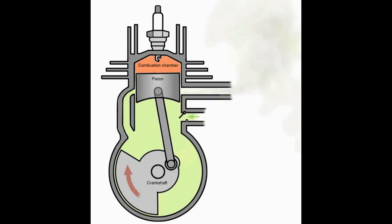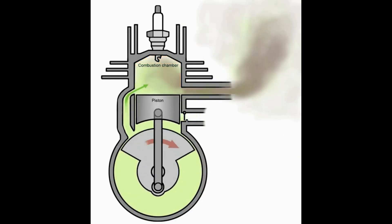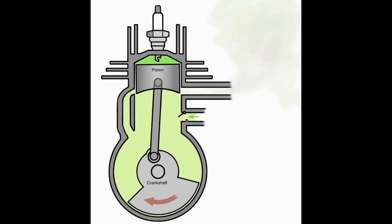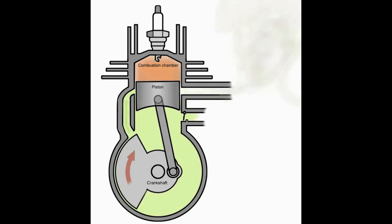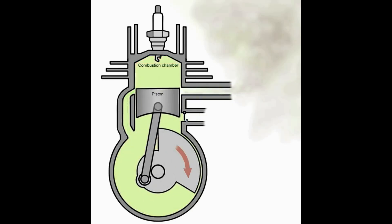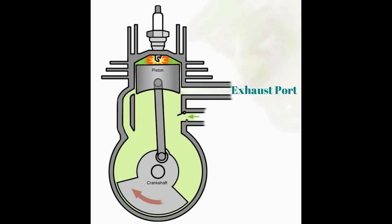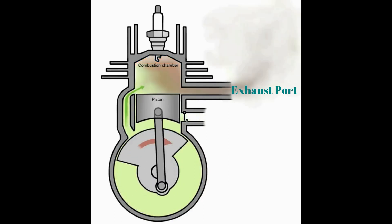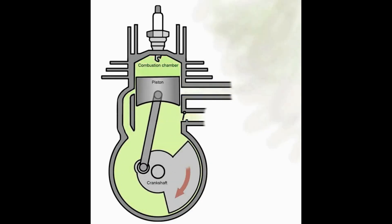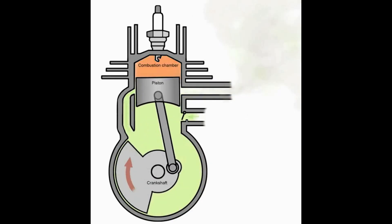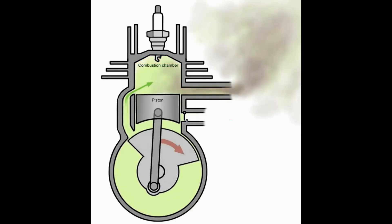The two-stroke engine has one piston. The crankcase is used for the gas exchange. There is also a spark plug, as well as an intake and exhaust port. A crucial difference is the presence of a transfer port.